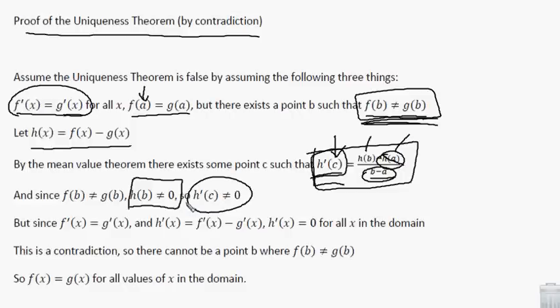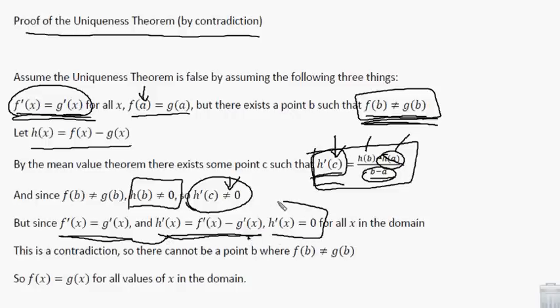Therefore, h prime of c is not zero, because h of b is not zero, b minus a is not zero, and h of a is zero. So h prime of c cannot equal zero — at the point c, plugging c into h prime gives something other than zero. However, from our first assumption that f prime of x equals g prime of x, the derivative of h prime is f prime minus g prime, which equals zero. So h prime of x equals zero for all x values.